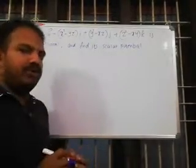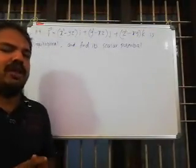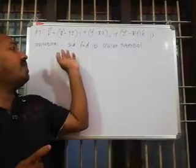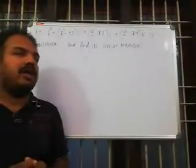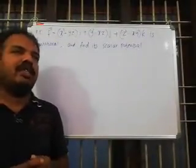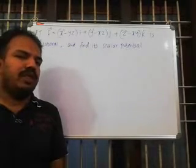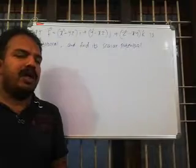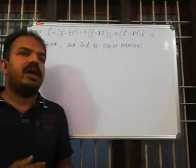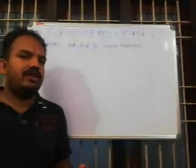Okay, so this is an important question. Show that a vector function theorem — it is irrotational in a conservative field. We need to find the scalar potential.